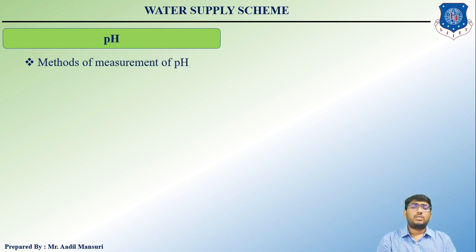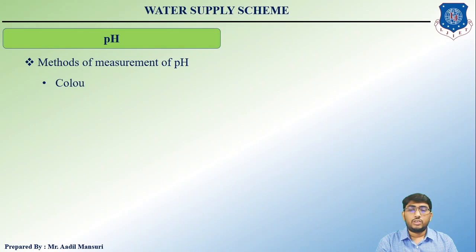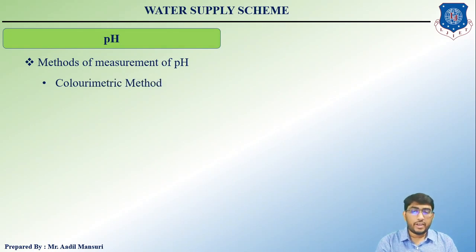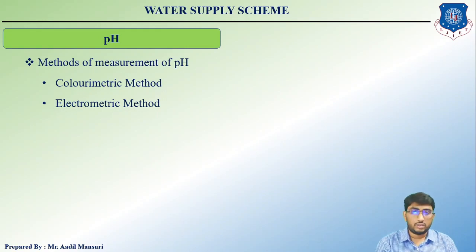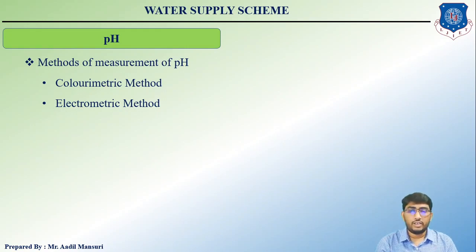There are two methods of measuring pH: the colorimetric method and the electrometric method. Let us look at each in detail.